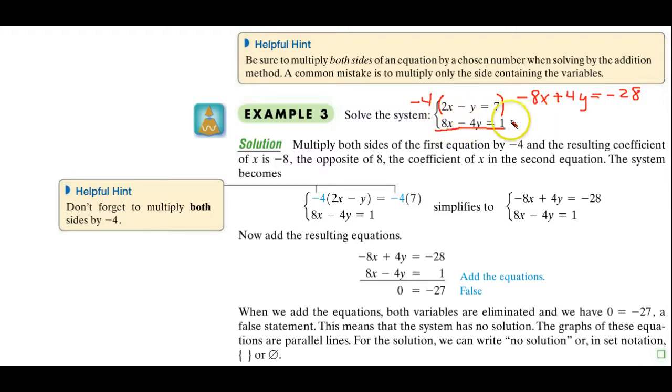Because a negative 4 times a negative y makes it a positive 4y. So now I rewrite it. This is going to become a negative 8x. This is going to become a positive 4y. And this is going to become a negative 28. Now this next equation, I just write it as it is. This is 8x, this is a negative 4y, and this is a positive 1. And you might say, wait a minute, something strange is happening here. But that's okay. Just follow us along here. These cancel out also and this gives me a 0. And this is a 0, and this is a negative 27.